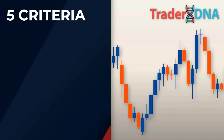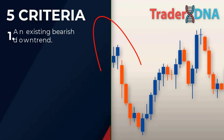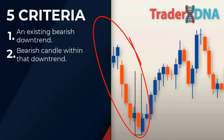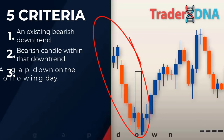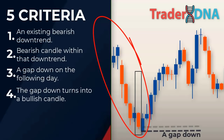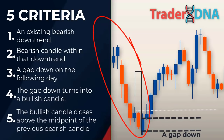The five criteria for the piercing pattern are: first, an existing bearish downtrend; second, a down or bearish candle within that downtrend; third, a gap down on the following day; fourth, the gap down turns into a bullish candle; fifth, the bullish candle closes above the midpoint of the previous bearish candle.